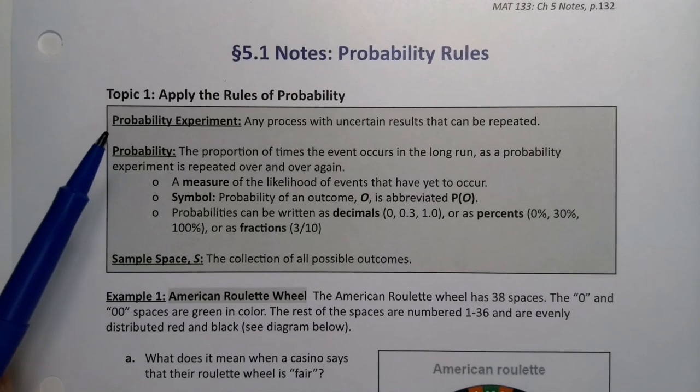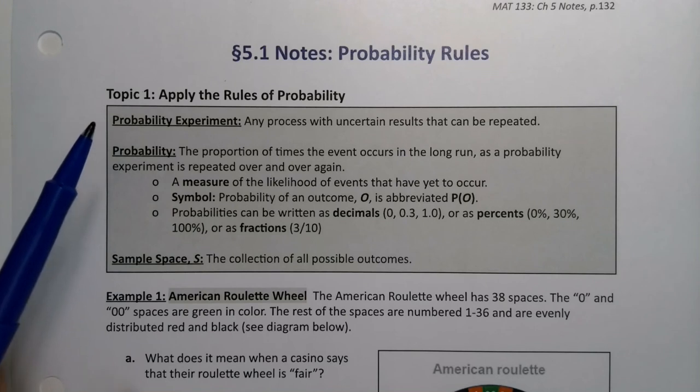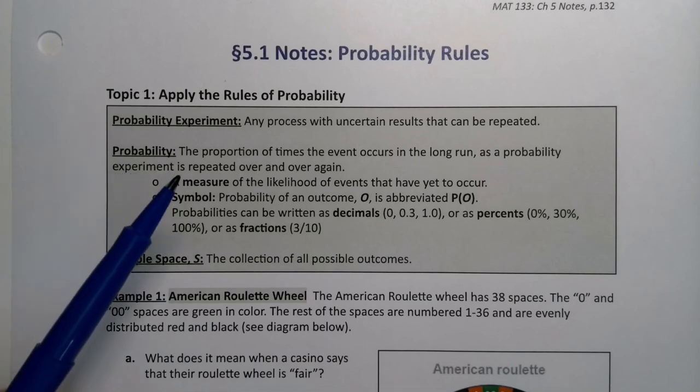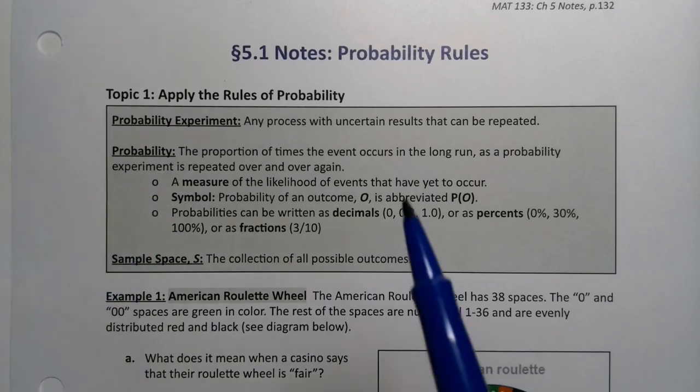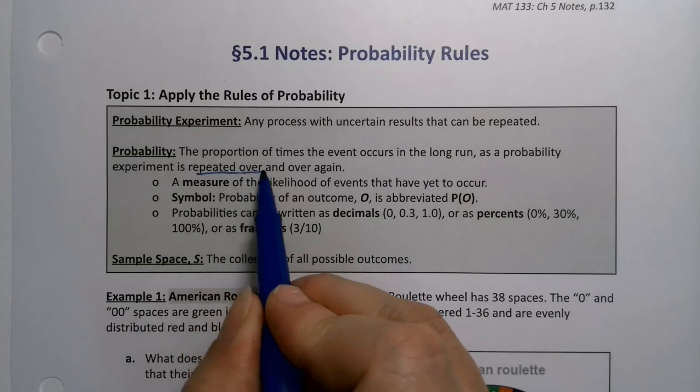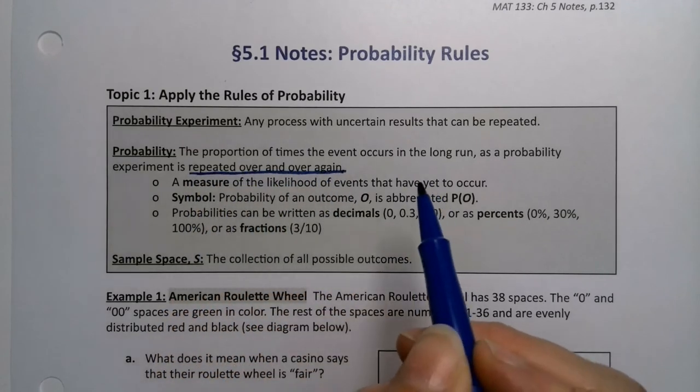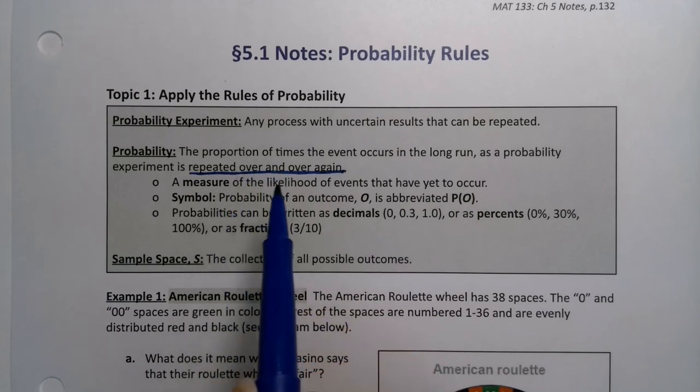A probability experiment is any process with uncertain results that can be repeated, so anything you can do more than once that would have uncertain results. Probability is the proportion of times the event occurs in the long run as a probability experiment is repeated over and over again. We have to think about it in terms of the frequentist view of probability.